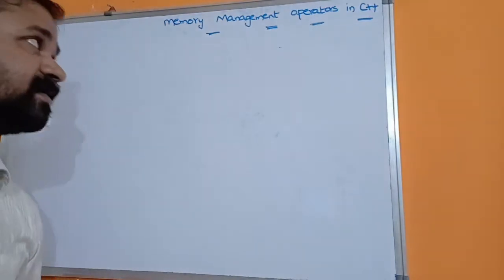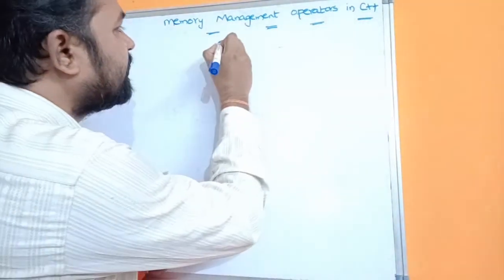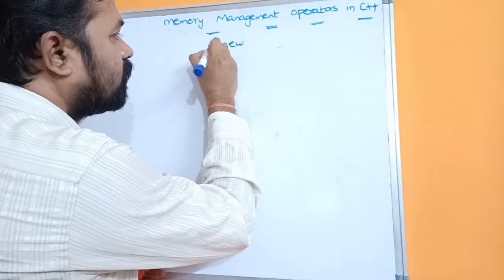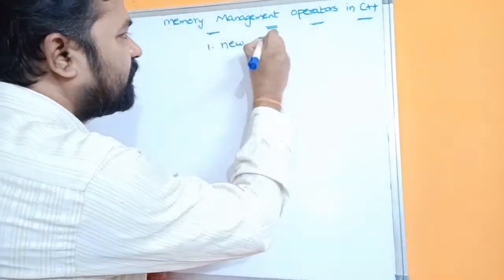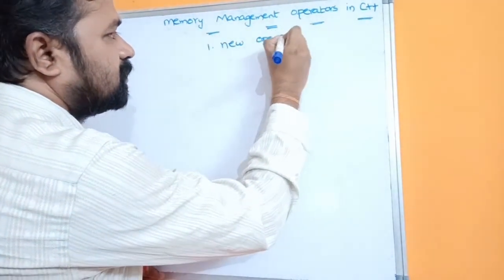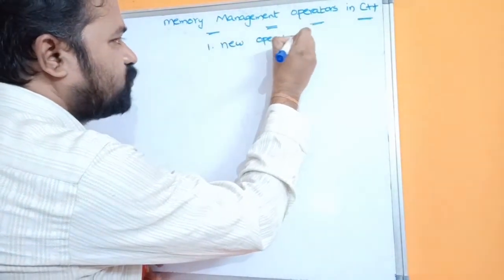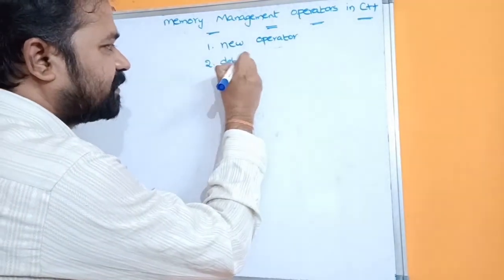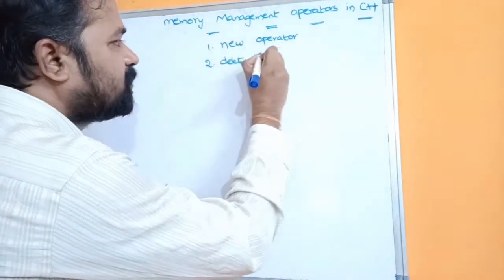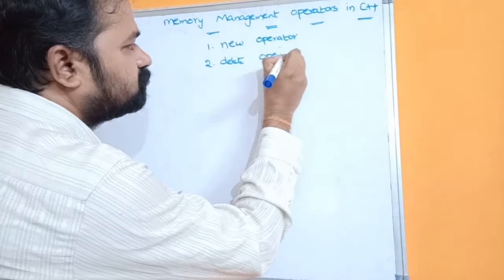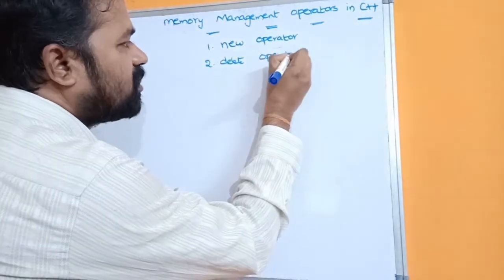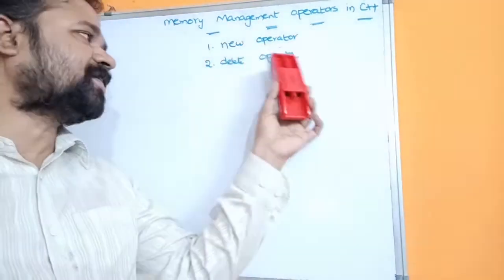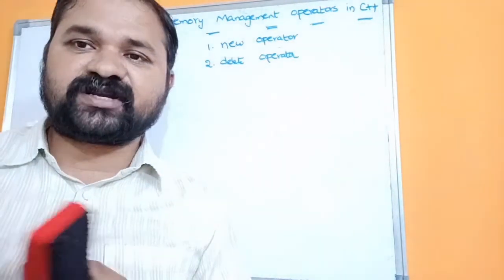In C++, we have two memory management operators. The first one is the new operator and the second one is the delete operator. New operator is similar to malloc and calloc functions, whereas delete operator is similar to the free function.